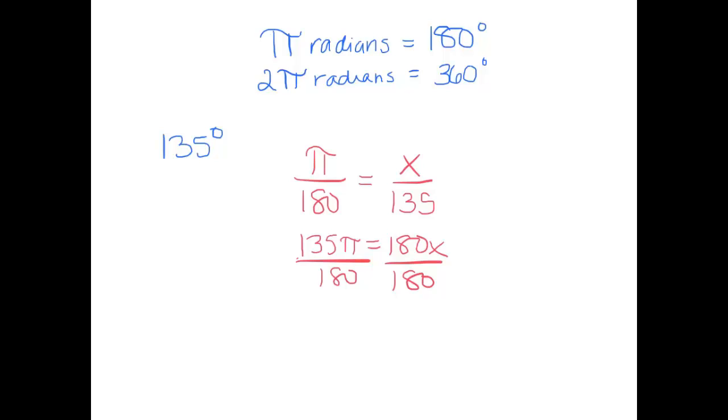So what number goes into both of those? I think 45 goes into both of those. So 135 divided by 45 is 3, and 180 divided by 45 is 4. So 135 degrees is the same thing as 3π over 4 radians.